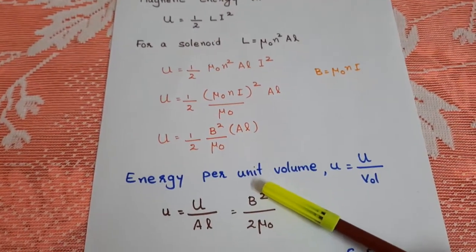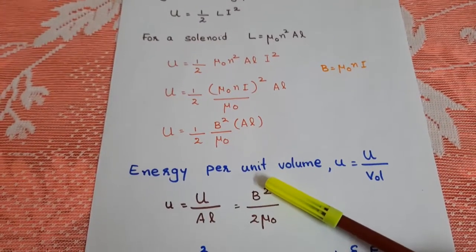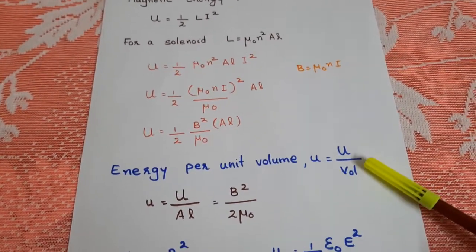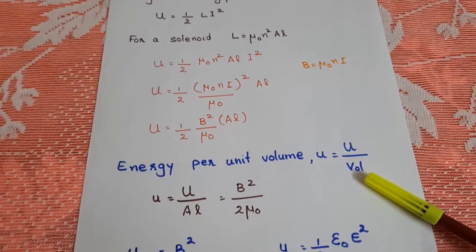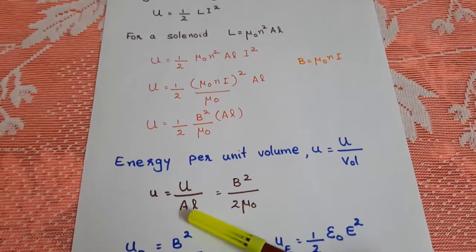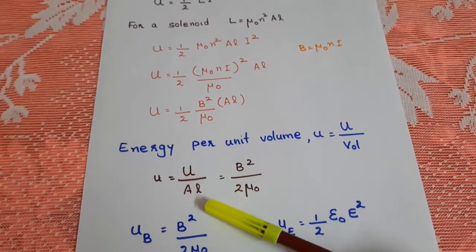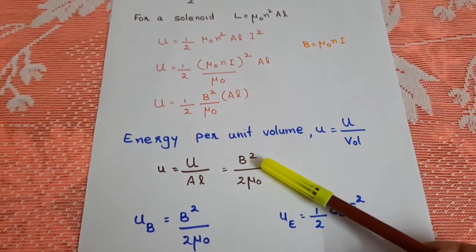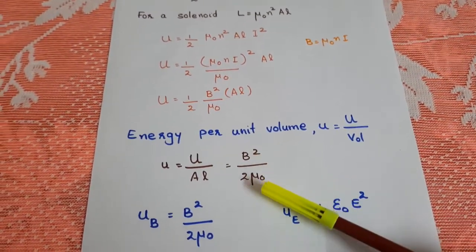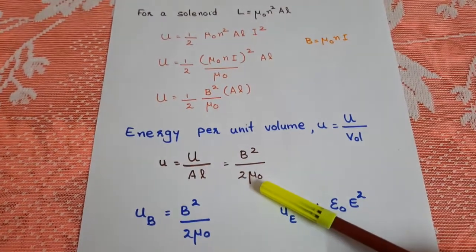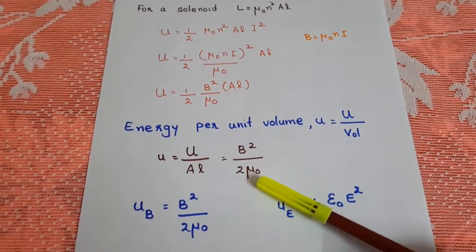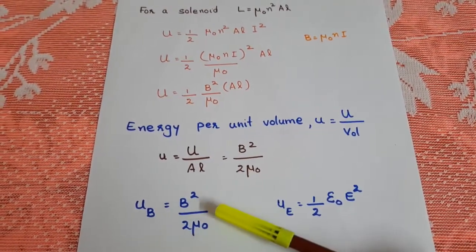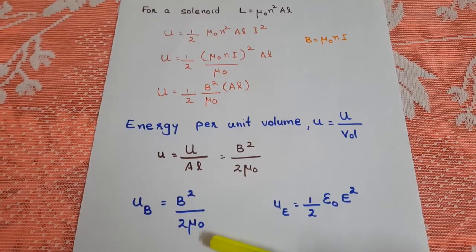So the potential energy density in an inductor is the energy per unit volume. Small u is equal to capital U by volume, or energy density is total energy by A L. So it is equal to B square by 2 mu0. The energy stored in the magnetic field is B square by 2 mu0.